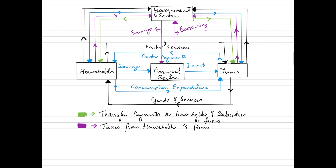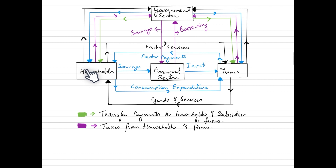With the introduction of the government sector, the same activities are performed by the government with each sector. Households provide factor services to the government, for which the government makes payments to them — so households now have two income flows, one from firms and one from the government. Similarly, the government acts as a consumer of goods produced by firms and makes payments to firms for those goods.